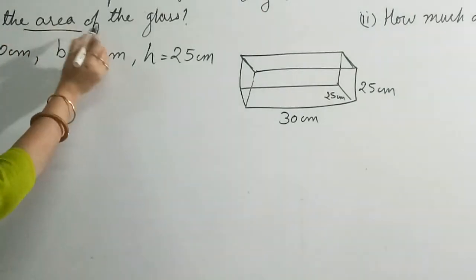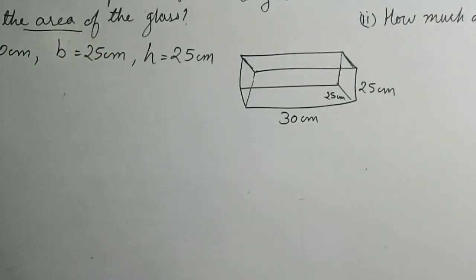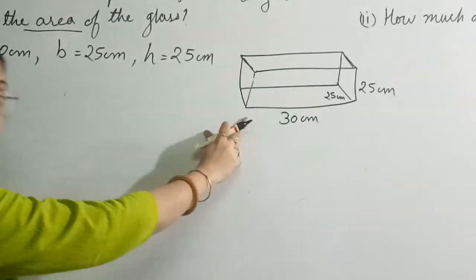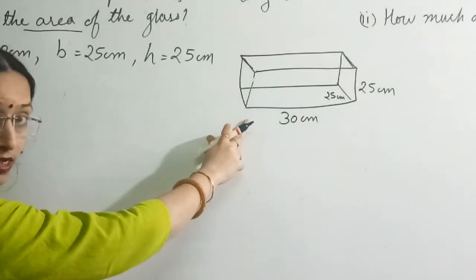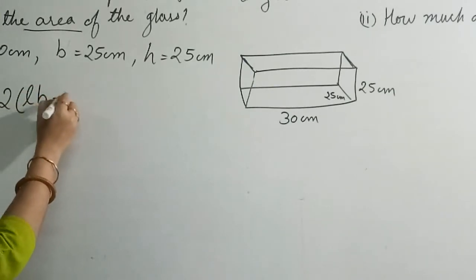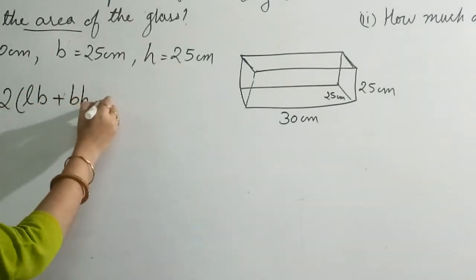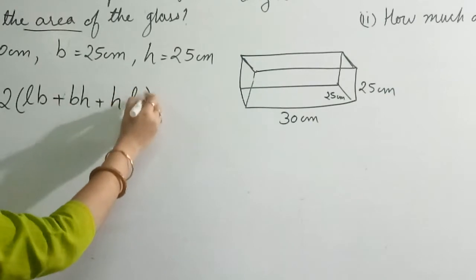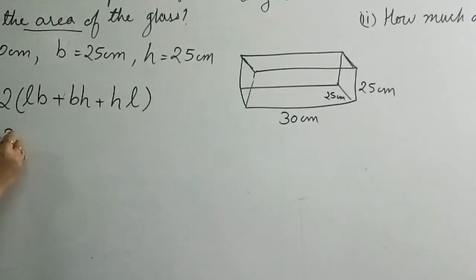Okay, find the area, total area of that. We will find total surface area. The shape is of a cuboid, so our formula will be for total surface area: 2 bracket length into breadth plus breadth into height plus height into length. And so we will get total surface area.